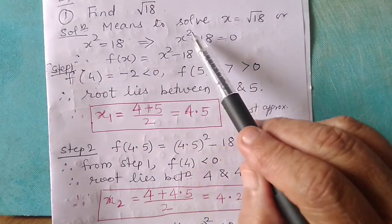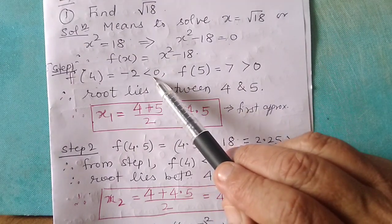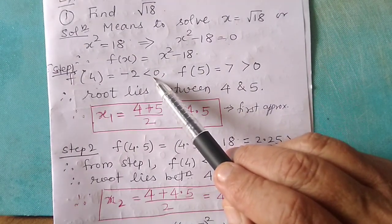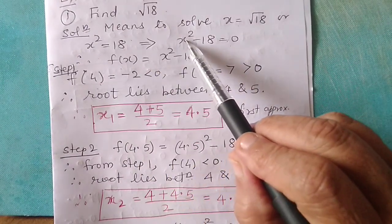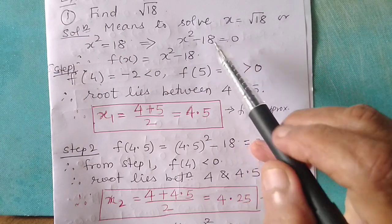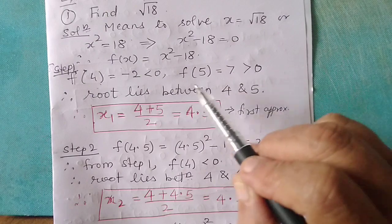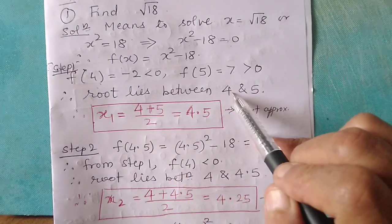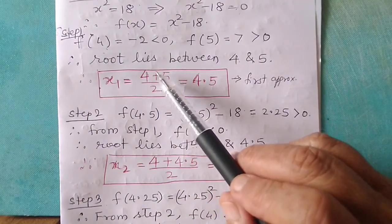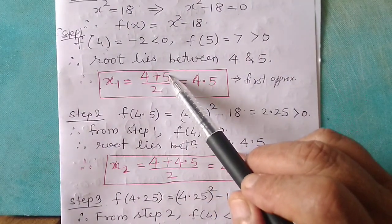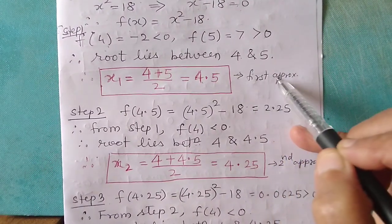First step: I am going to find f of 4 by trial and error. f of 4 equals 4 square minus 18 equals minus 2, which is negative, less than 0. f of 5 will be 25 minus 18 equals 7, which is greater than 0. Therefore, the root lies between 4 and 5. The first approximation is the midpoint of 4 and 5, that is 4 plus 5 upon 2, which equals 4.5.